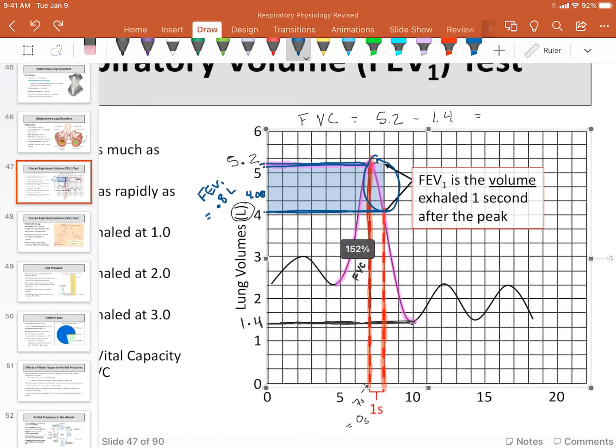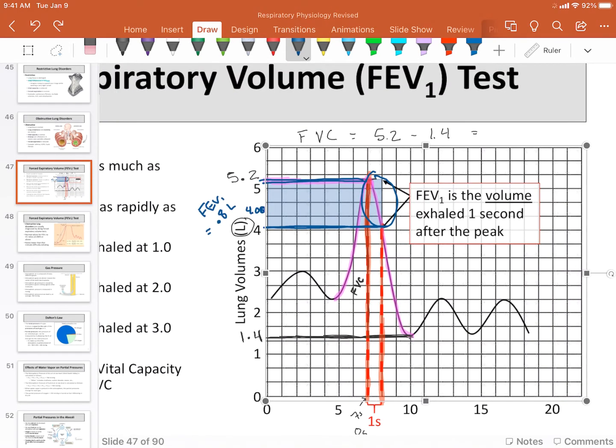Now let's look at my vital capacity. So my vital capacity is going to be equal to my 5.2 minus 1.4. So that should be my 3, let's do it in black, 3.8 liters.